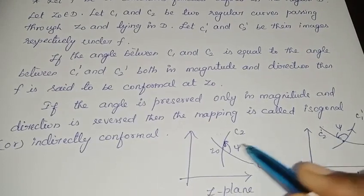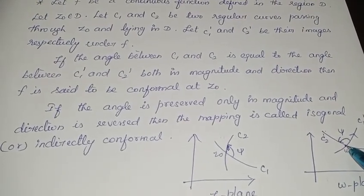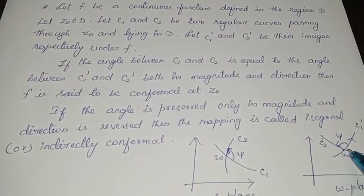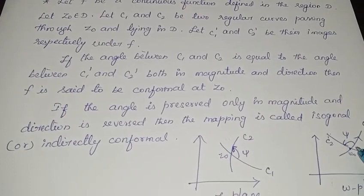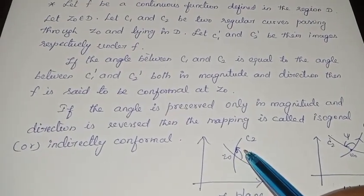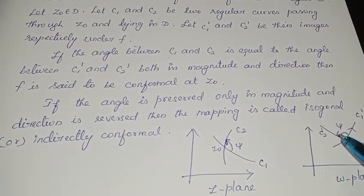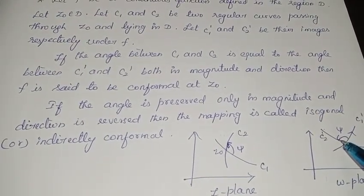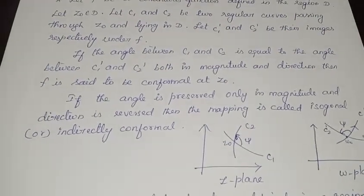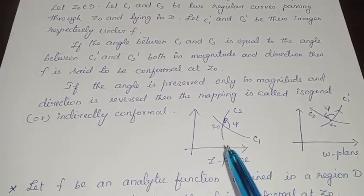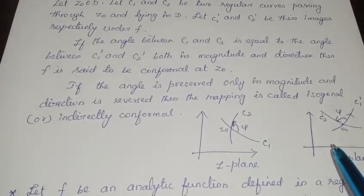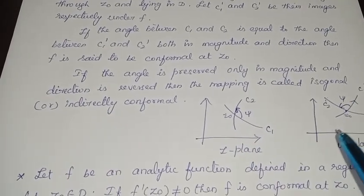I am taking two regular curves passing through the point z₀ in the z-plane, and their respective images in the w-plane are taken to be c1' and c2'. At the image point w₀, they are also intersecting. If the angle ψ there is also equal to the angle here — both in magnitude as well as direction — then the mapping is said to be a conformal mapping. Otherwise, if only the magnitude of the angle is preserved and the direction is reversed, then it is said to be isogonal or indirectly conformal. In simple words, if the angles in the z-plane and w-plane are equal in magnitude and direction, it is conformal. If the angles are equal only in magnitude, it is called isogonal or indirectly conformal.